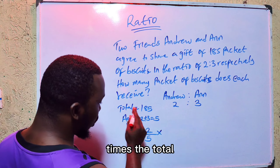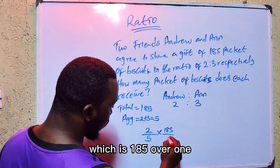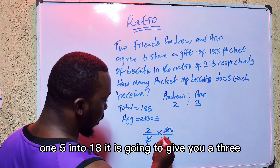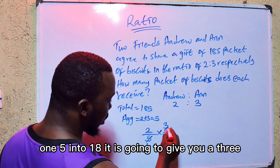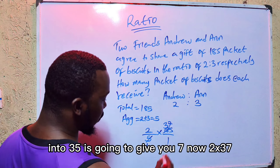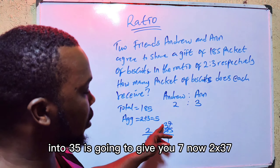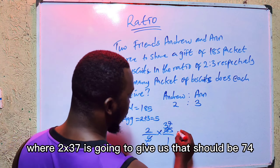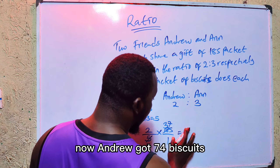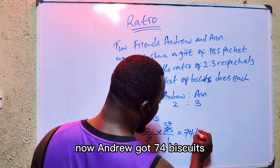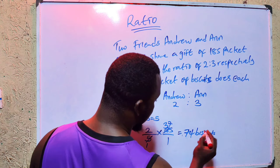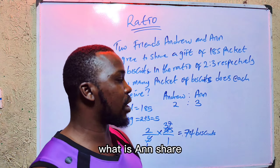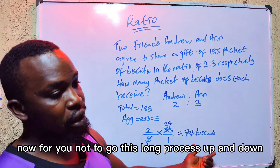The first thing I need to find is the aggregate ratio, or the total ratio. The aggregate ratio equals 2 plus 3, which gives us 5. Now to find the share of A: it becomes 2 over 5 times 60, which equals 24 naira.